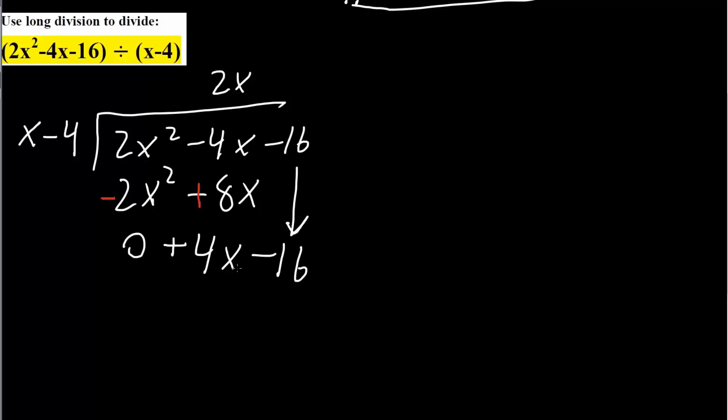So we do the exact same thing. How can we get 4x? We can get 4x by multiplying this by 4. So it would be plus 4. So this would be a 4x. Negative 4 times 4 is negative 16. And we do the exact same thing. We would take the opposite. So minus 4x plus 16. And so this would be 0, 0. So no remainder. So this final answer would be 2x plus 4.